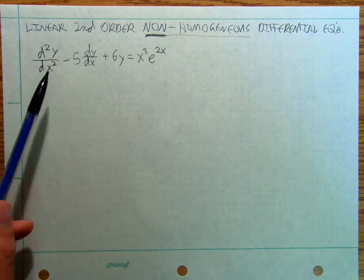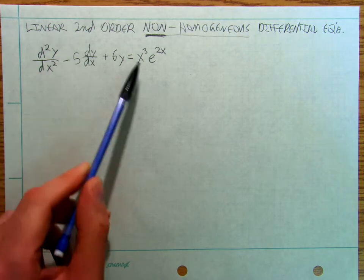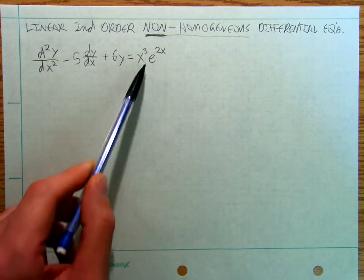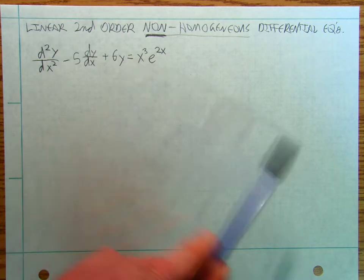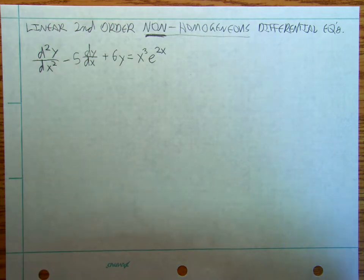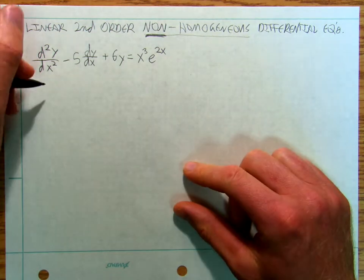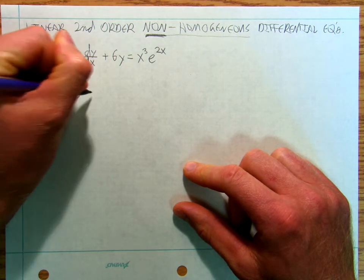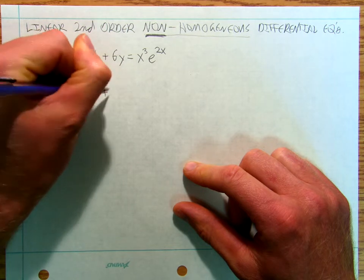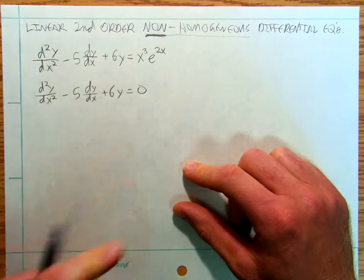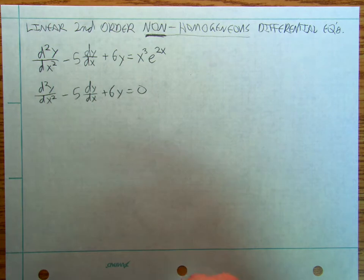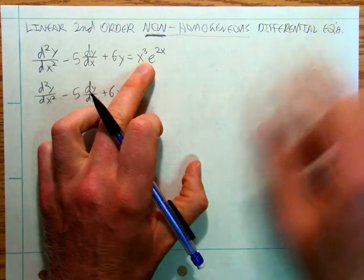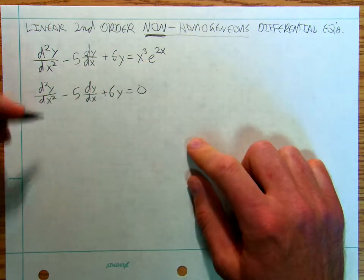So we've got second order, linear, and it's non-homogeneous because in my previous video this is equal to zero — now it's equal to some function. So how are we going to solve this? The first thing we're going to do is solve the homogeneous case, and then we're going to come back and deal with the fact that it's non-homogeneous.